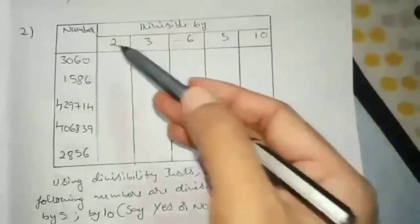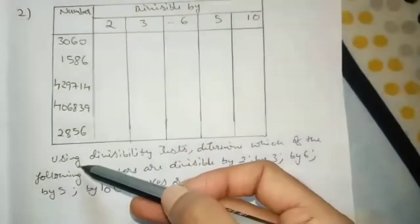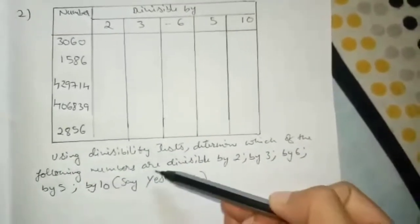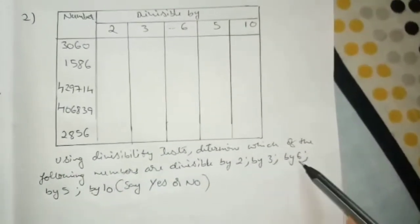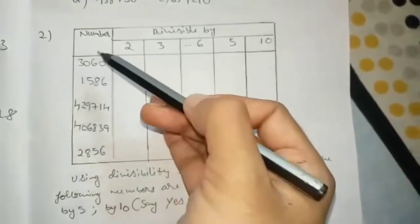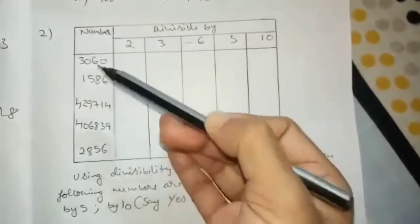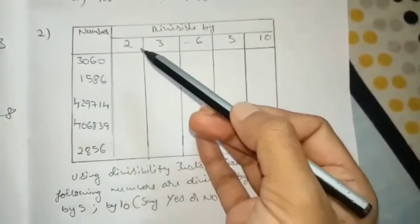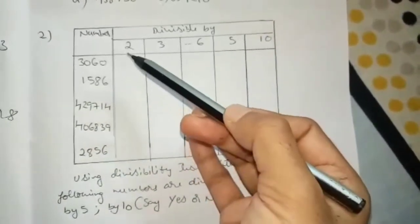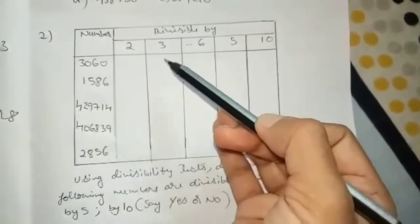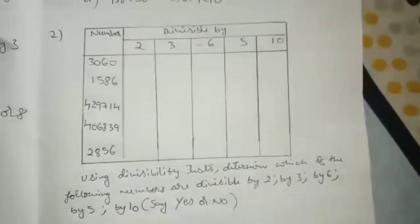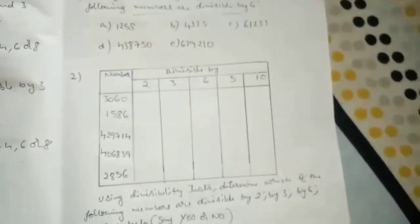Second question: they have given a table. Using divisibility tests, determine which of the following numbers are divisible by 2, by 3, by 6, by 5, and by 10. You have to fill in yes or no. There are 5 numbers — check divisibility by 2, 3, 6, 5, and 10 for each, and fill in the table with yes or no. All these questions are in your home workbook. Thank you.